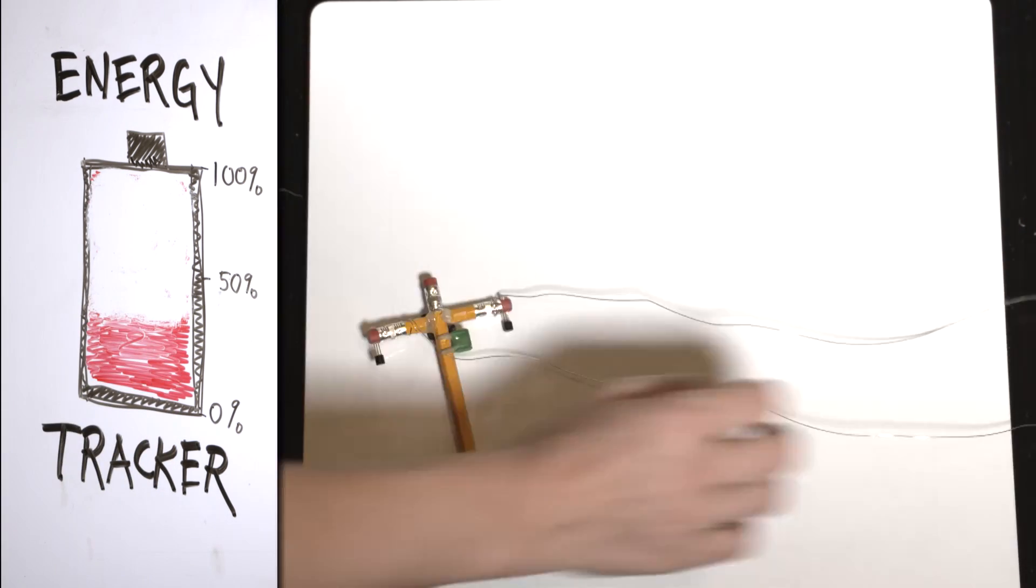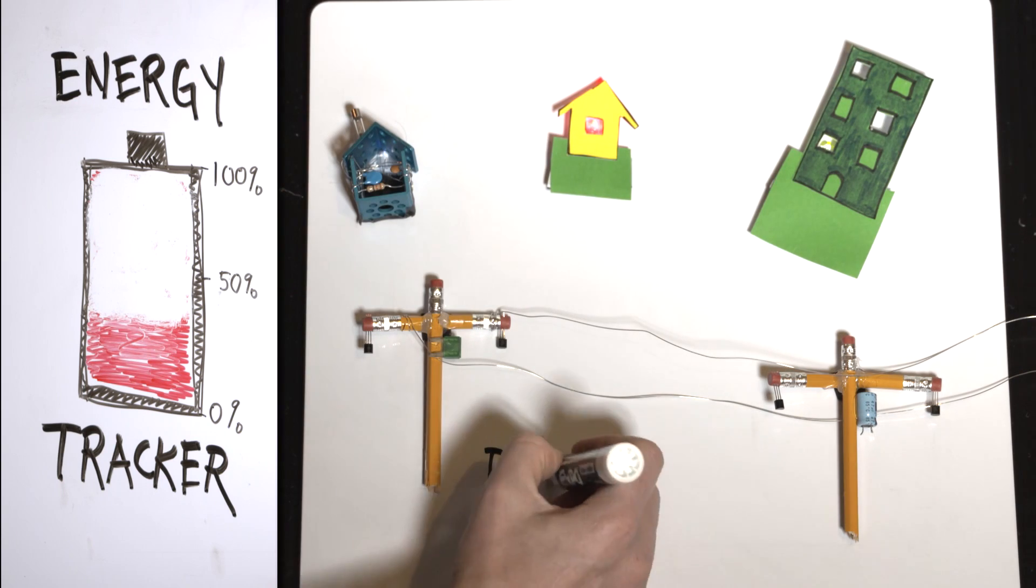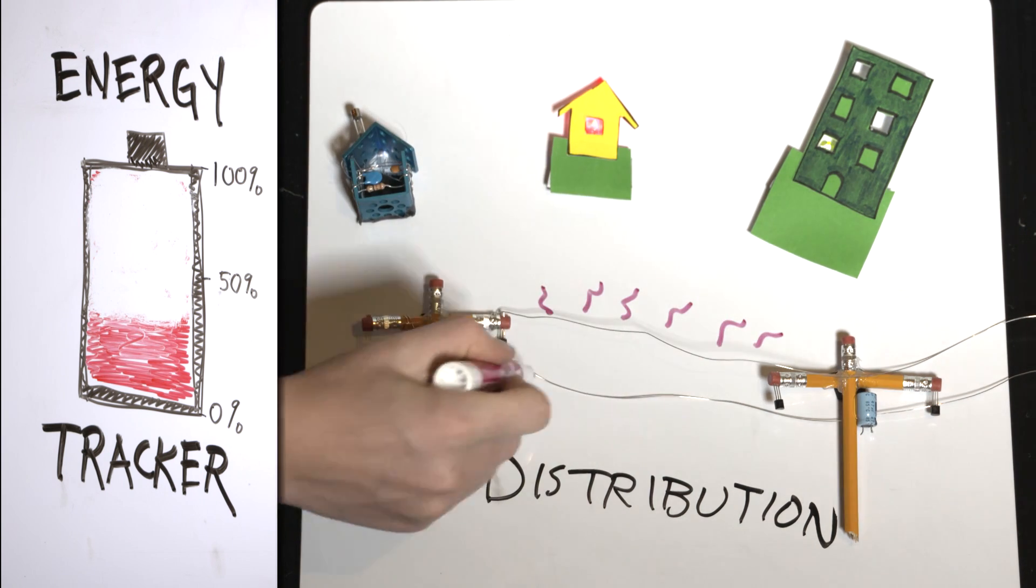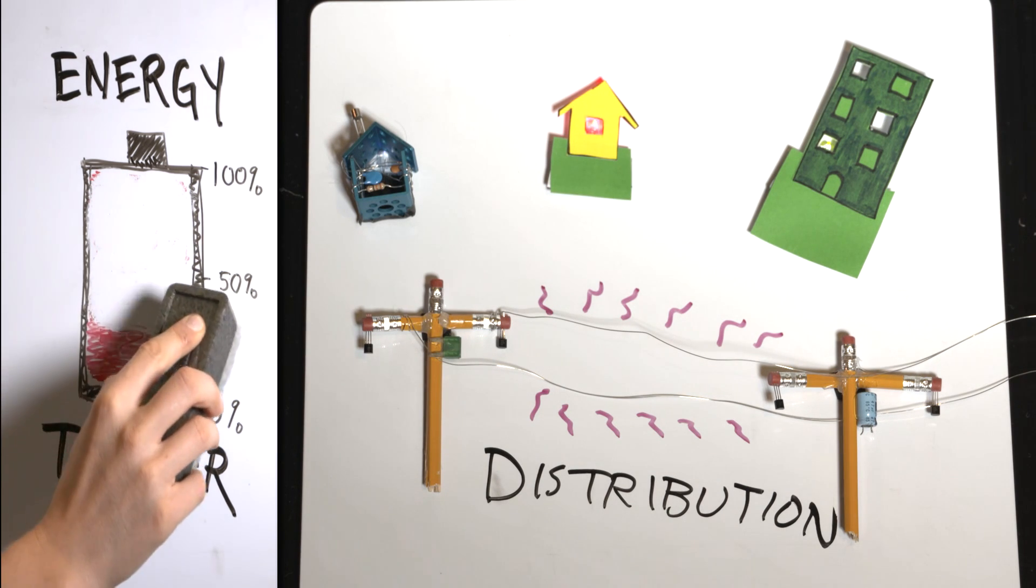Then, distribution, where electricity flows through your neighborhood on smaller, lower-voltage power lines. Transformers, those are the cans on power poles, step it down to a voltage that's safe for your home. In that last mile or so, we lose about 4% of the energy in our electricity.